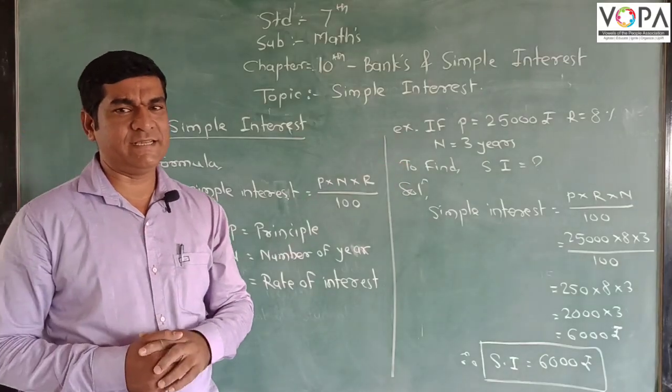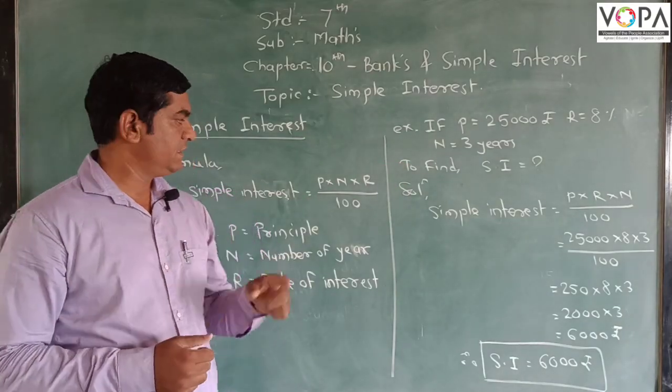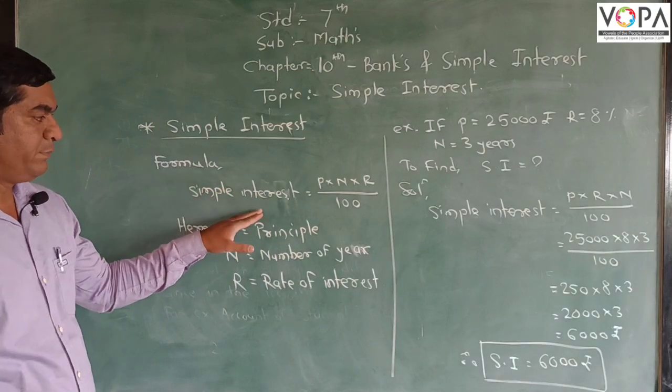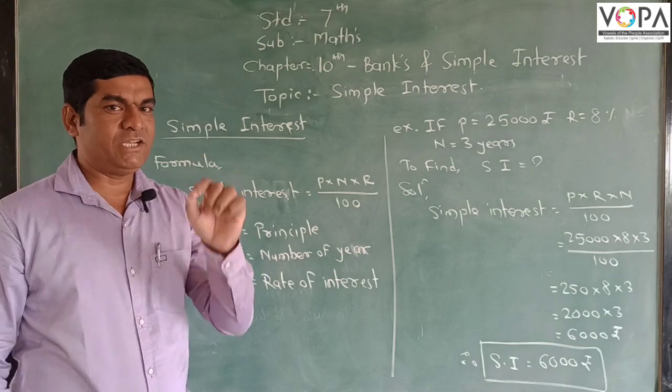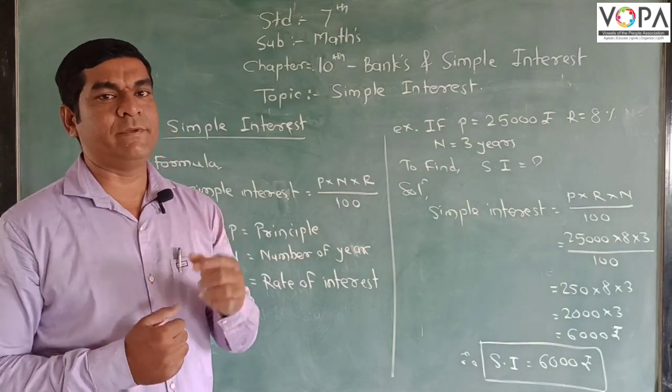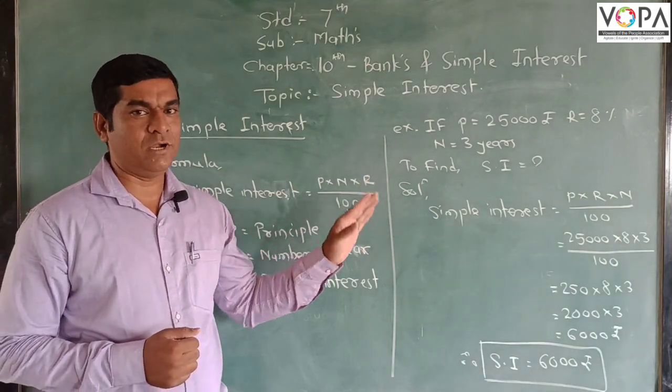First, Simple Interest - it is a very simple formula to find Simple Interest. The formula for Simple Interest equals P into A into R upon 100. In a very short cut, how we learn and remember this formula: P N R upon 100.